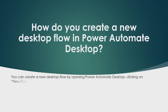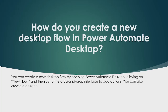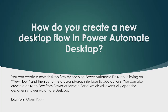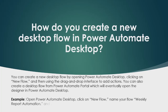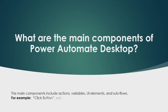The second question is: how do you create a new desktop flow in Power Automate Desktop? You can create a new desktop flow by opening Power Automate Desktop, clicking on 'New Flow', and then using the drag-and-drop interface to add actions. You can also create a desktop flow from the Power Automate portal, which will open the designer in Power Automate Desktop. For example, click on 'New Flow', name your flow 'Weekly Report Automation', and start adding actions like 'Launch Excel' or 'Read from Excel Worksheet'.